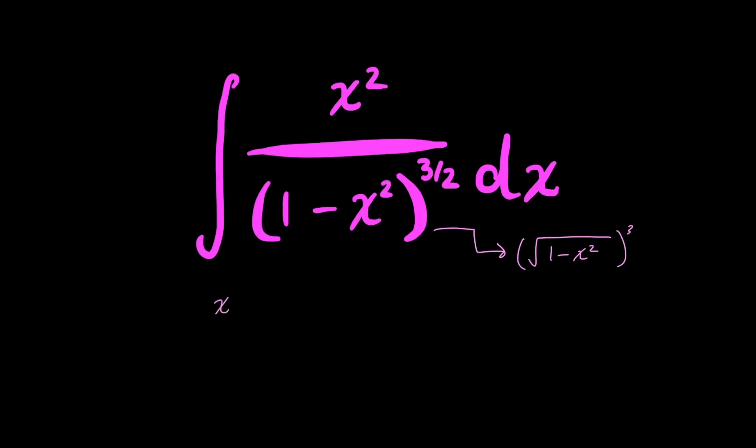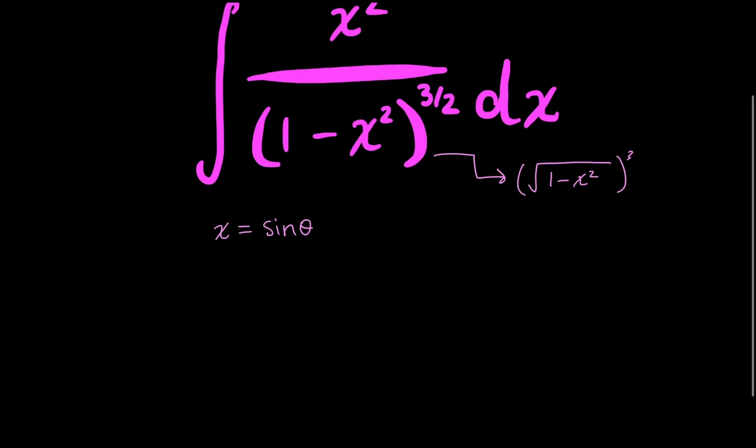So my x is going to be defined as sine theta. And my a in this case is equal to 1, because if we're looking at this as the form of a squared minus x squared, square root of 1 is just 1. And then dx would be equal to cosine theta d theta.